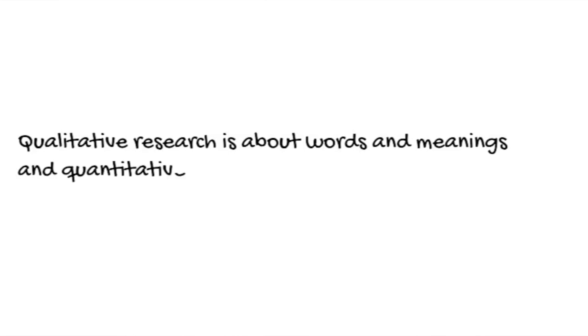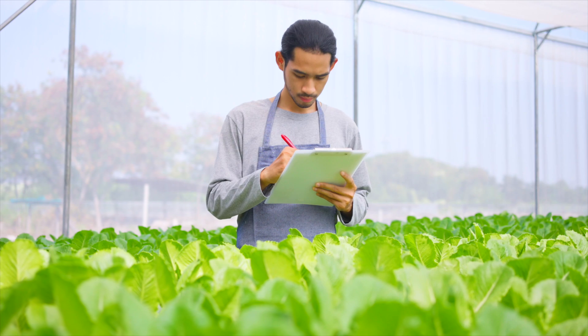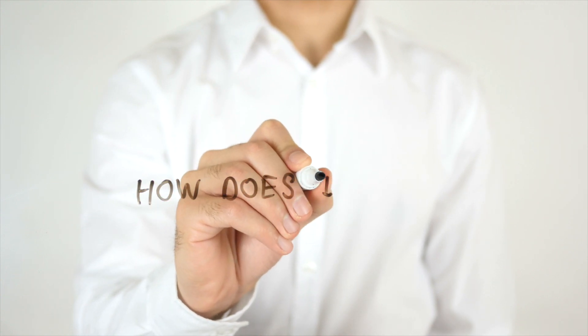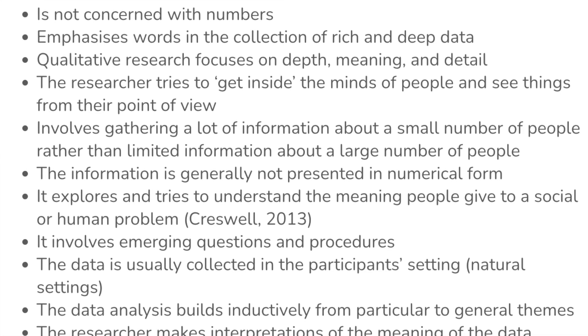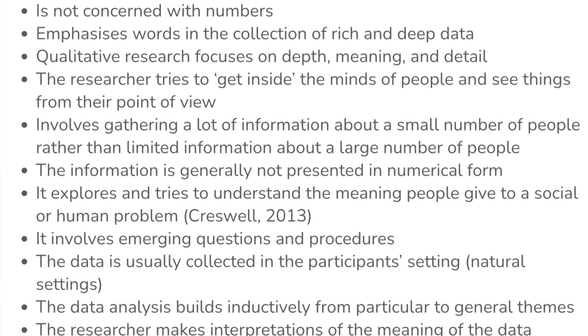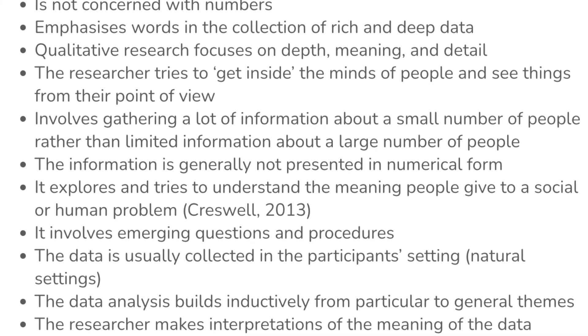Put simply, qualitative research is all about words and meanings, and quantitative research is about numbers and statistics — but there is a little bit more to it. Qualitative research is not concerned with numbers; it's more about words and actions, and it's useful to answer questions such as how and why. It emphasizes words in the collection of rich and deep data, and focuses on depth, meaning, and detail. The researcher essentially tries to get inside the minds of people and see things from their point of view.